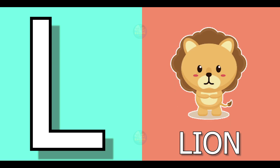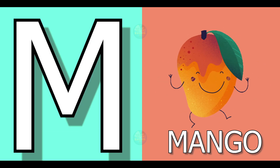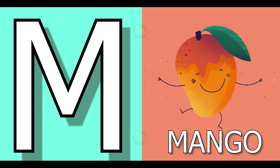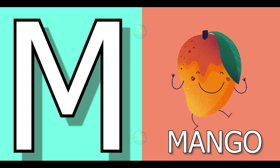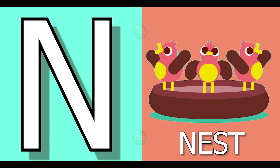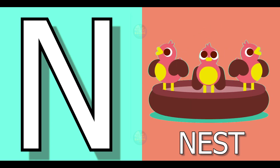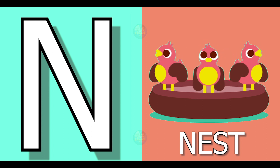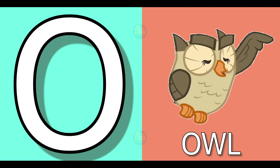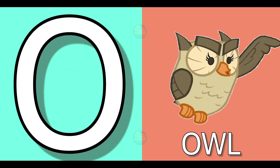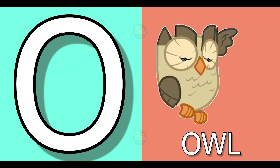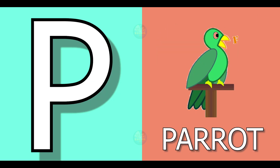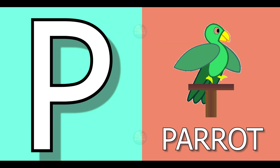L for lion, lion means share. M for mango, mango means arm. N for nest, nest means ghosla. O for owl, owl means ullu.